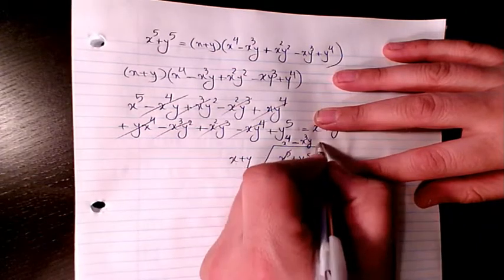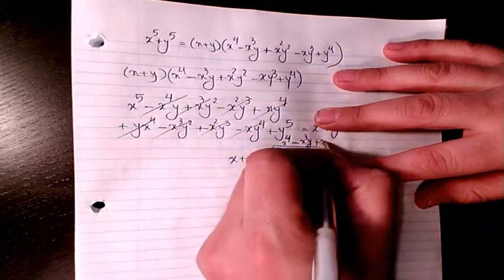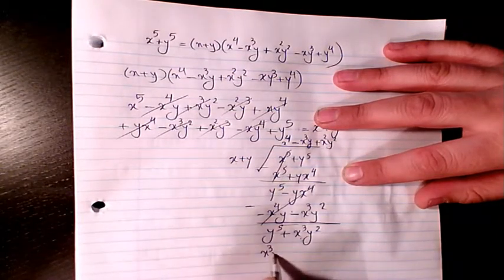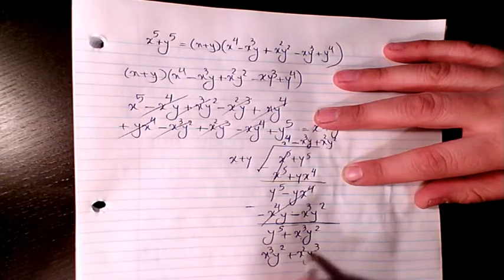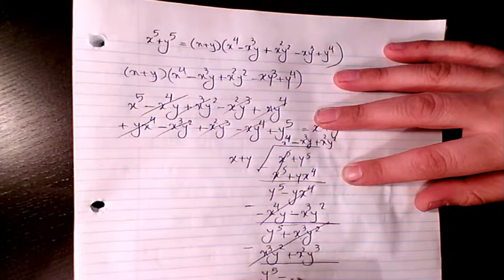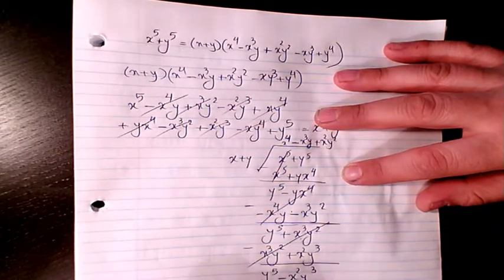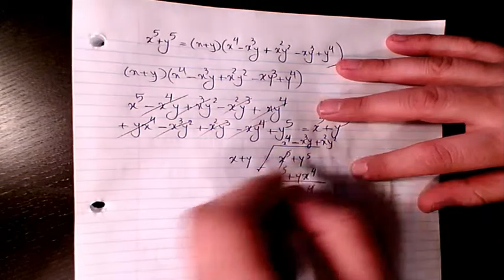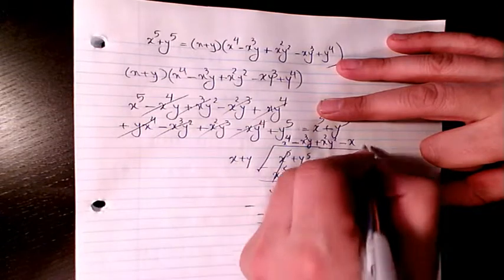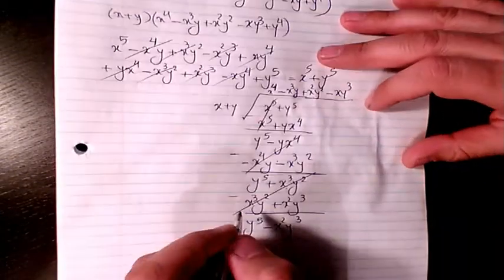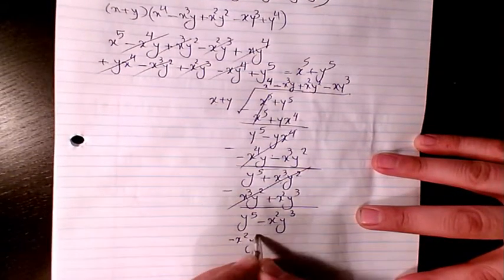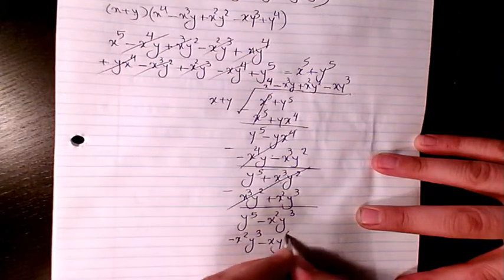Then if I multiply, it is going to be x squared y squared. Multiplying gives x to the power of 3 y squared plus x squared y cubed. These two cancel out, leaving y to the power of 5 minus x squared y cubed. Then I will have minus x y cubed, so I multiply it. It will be negative x squared y cubed minus x y to the power of 4.